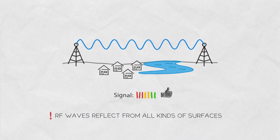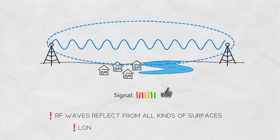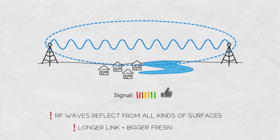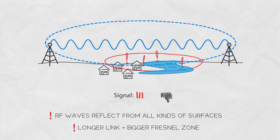The general rule of thumb is to be aware that the longer the link distance, the bigger the Fresnel zone becomes, potentially making the link more sensitive to the vertical antenna position adjustment.